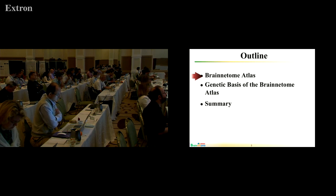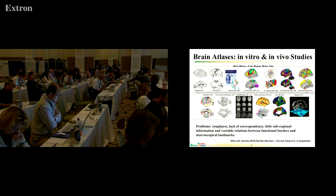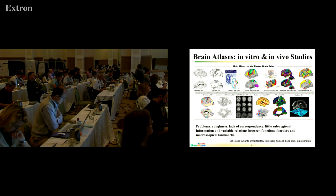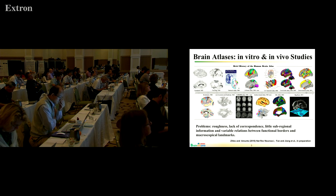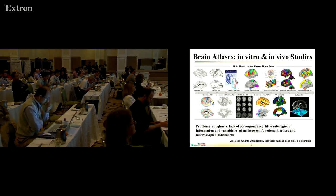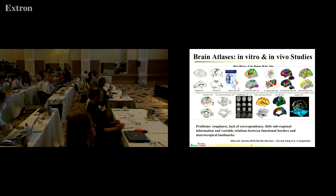First, I'll give a brief introduction about what is the Brainnetome ATLAS. For ATLAS, there are a lot of studies based on different information. For example, U-Brain and Brodmann ATLAS based on cytoarchitecture. But here, the Brainnetome ATLAS is based on the connectivity profile, especially based on the anatomical connectivity profile.